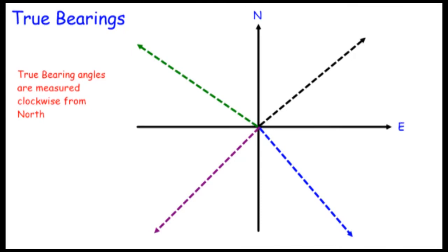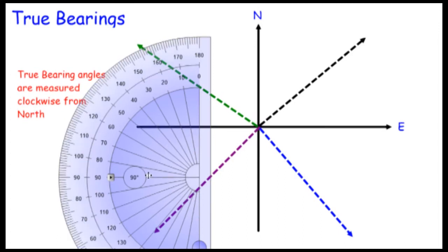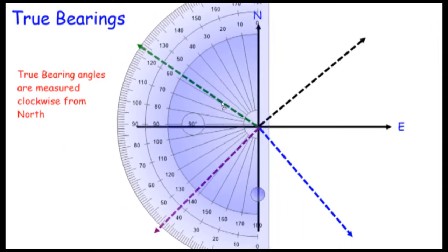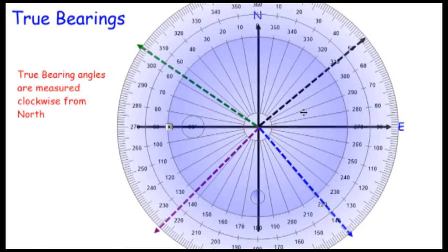Welcome to Massive Maths. Today we're looking at true bearings and some problems involving true bearings. A true bearing is simply an angle measured from north in a clockwise direction — the compass north, which is different from geographic north, about 800 kilometers apart. We'll start by measuring some angles to look at some examples of bearings.